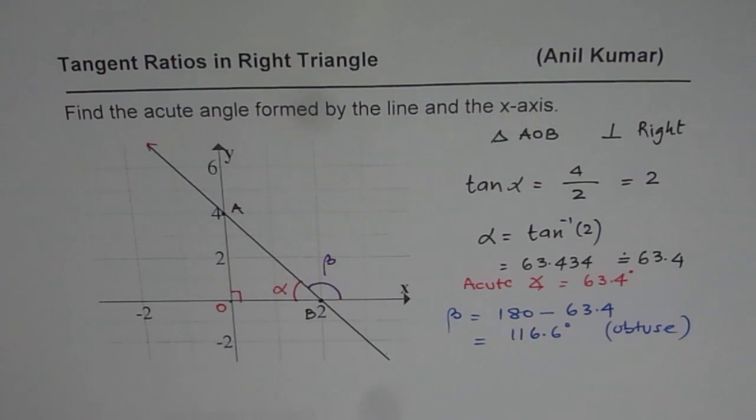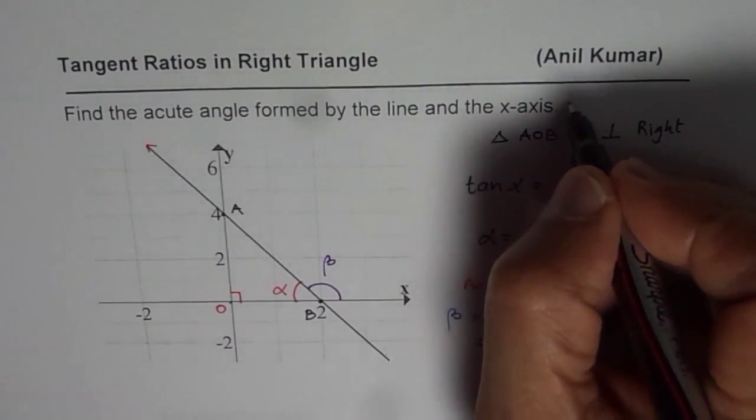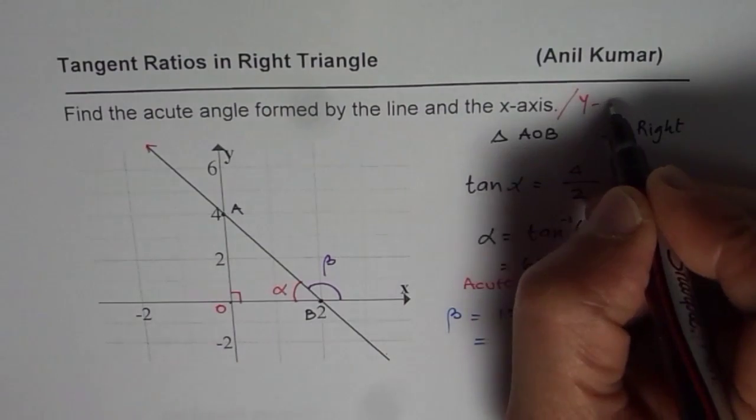So that is how you can find the acute angle or the obtuse angle, or the angle which the line makes with the horizontal x-axis. Now as an exercise, let us change this question a bit. Find what angle the line makes with the y-axis.